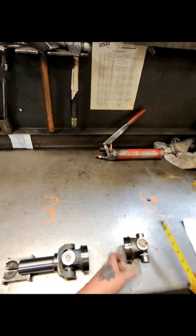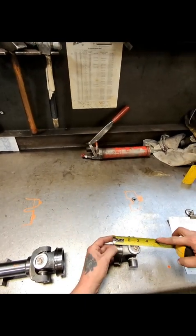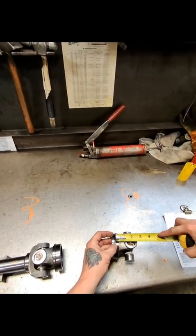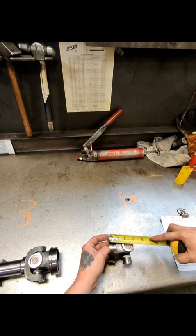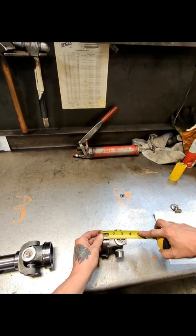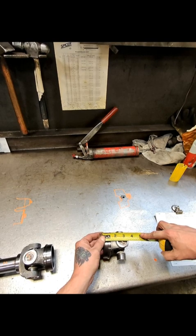So what you want to do, take your first component here, get the center line distance from point of weld to center of the joint cap. And you can look in the book, but it's always a good idea to measure.